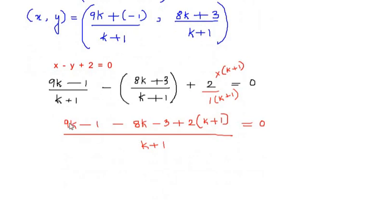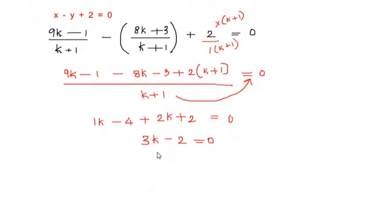Let us further solve this. We get 9k - 8k as k, and -1 and -3 gives us -4. Let us expand the bracket and we get 2k + 2. So we have k - 4 + 2k + 2 = 0, which gives us 3k - 2 = 0, or 3k = 2, or the value of k as 2/3.